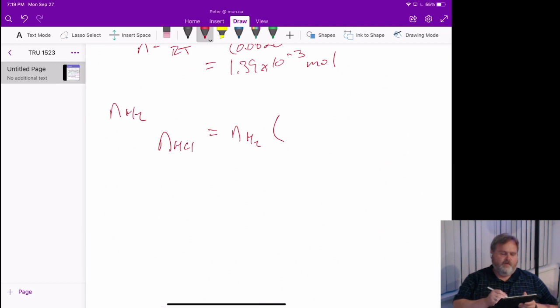So in other words, we are going to have 6 HCl divided by 3 H2s, that gives us essentially the ratio.